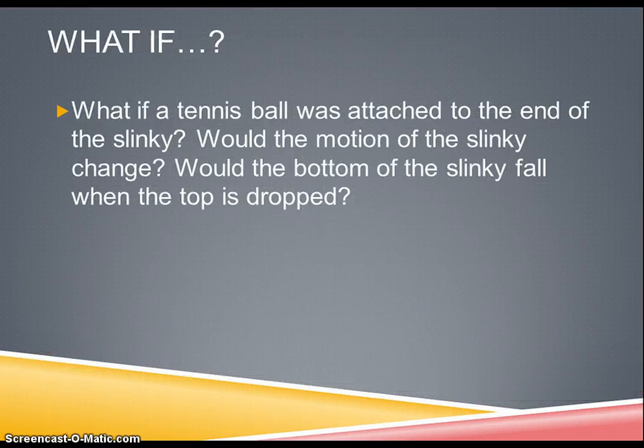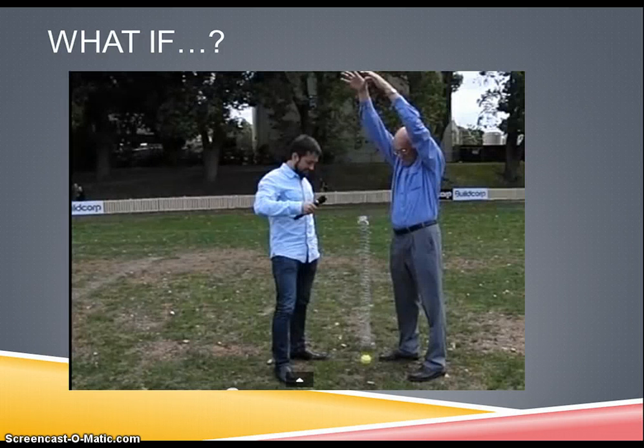Now, what if a tennis ball was attached to the end of the slinky? Would the motion of the slinky change? Would the bottom of the slinky fall when the top of the slinky is dropped? The same thing happens with the ball attached to the end of the slinky as what happens in the previous situation where there is no ball. It still appears to levitate for the same reasons. The ball causes the slinky to stretch a further distance and therefore the restorative force is stronger, causing it to have the same levitation effect.